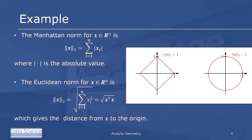Here's an example. The Manhattan norm, or the one-norm, is defined to be the sum of the absolute values of the components of x — that is, the sum of the absolute values of the xi's. The Manhattan norm gives the east-west north-south distance from the origin to the point.